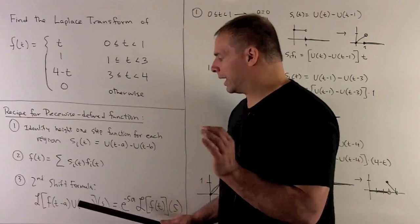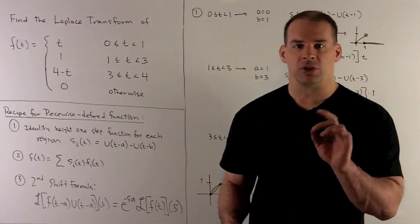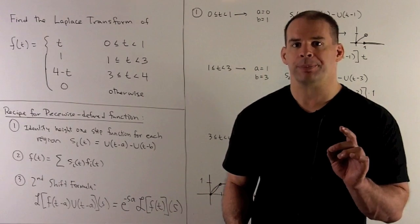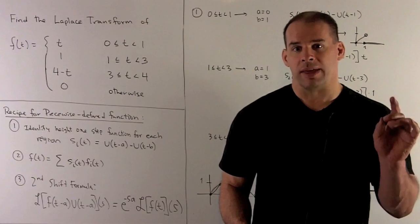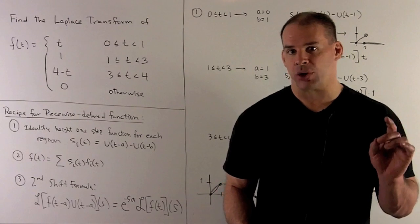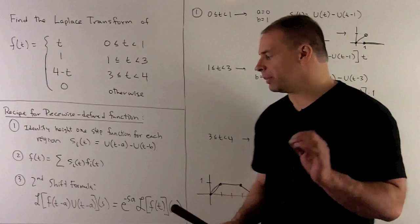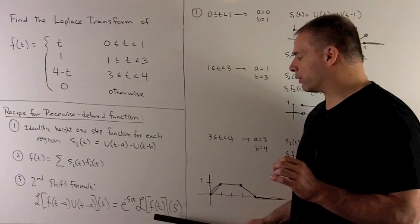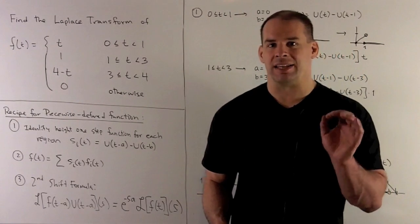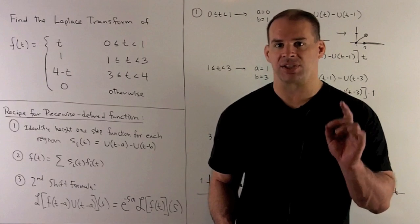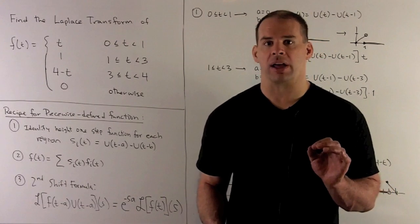The second shift formula says: if we take f of t times the unit step function u(t), shift everything by a, and take the Laplace transform, the result is the Laplace transform of the original function f multiplied by e to the minus s a. That's what gets us to our answer.